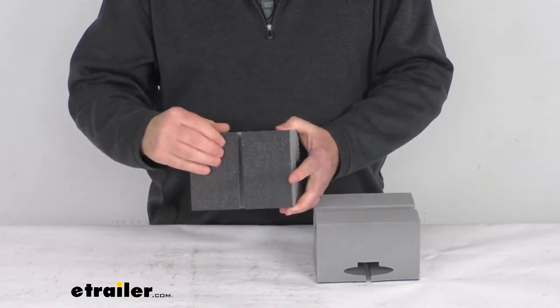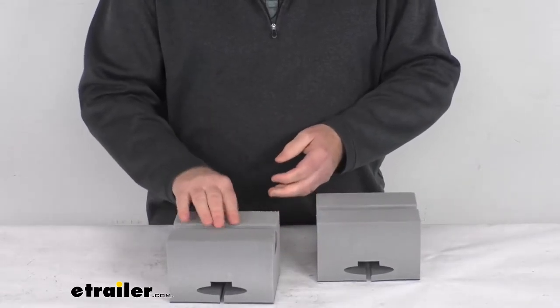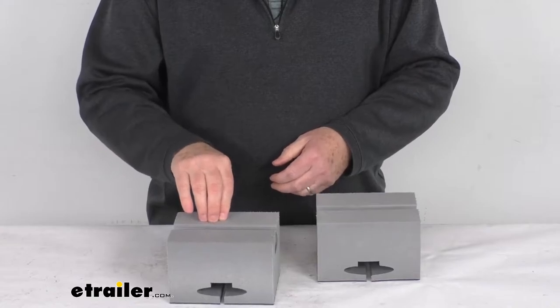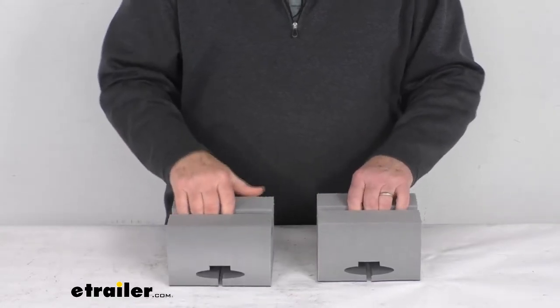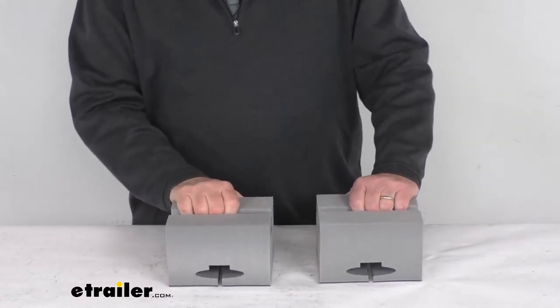The underside right down here you can see is a non-skid underside that keeps the block in place and protects your roof. These blocks will work with or without rooftop crossbars.